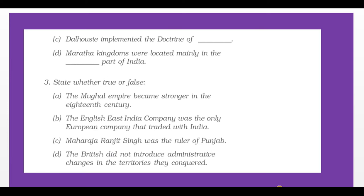State whether true or false: The Mughal Empire became stronger in the 18th century. The English East India Company was the only European company that traded with India. Maharaja Ranjit Singh was the ruler of Punjab. The British did not introduce administrative changes in the territories they conquered.